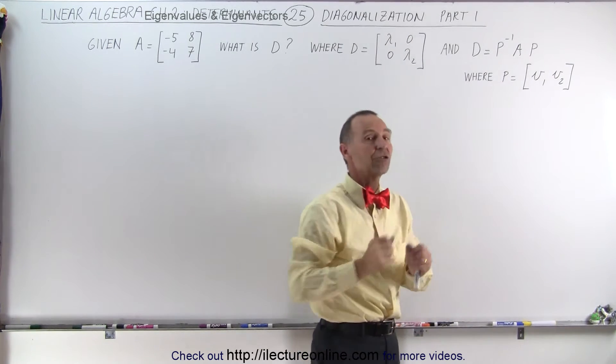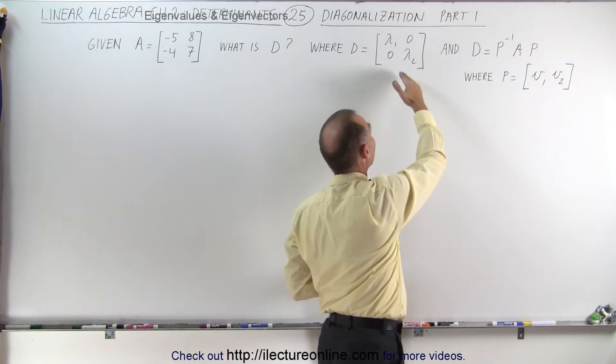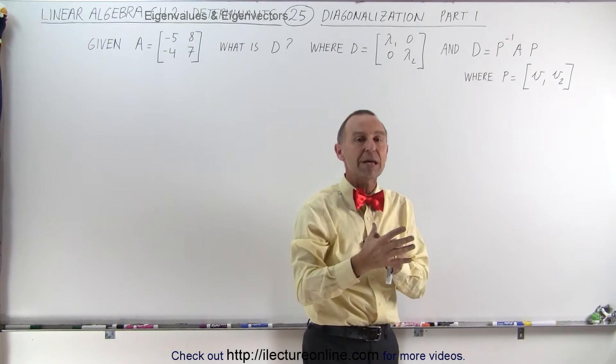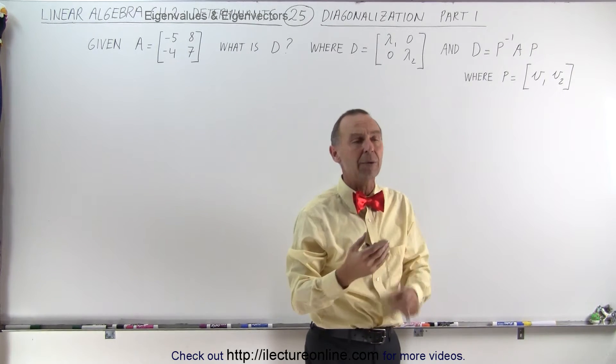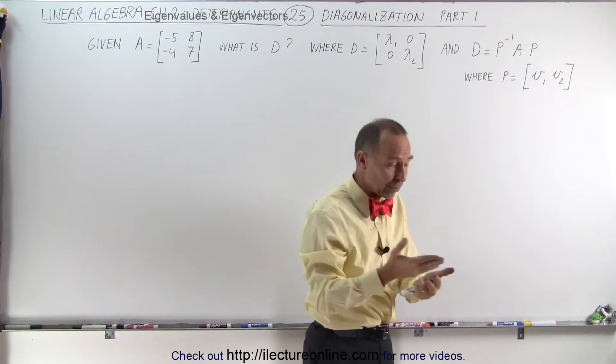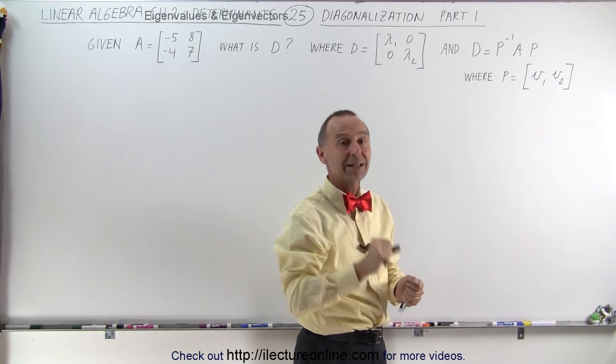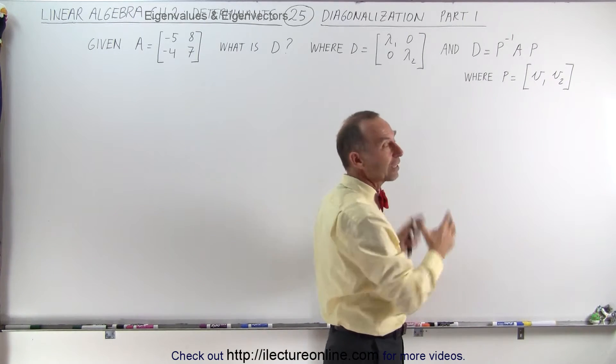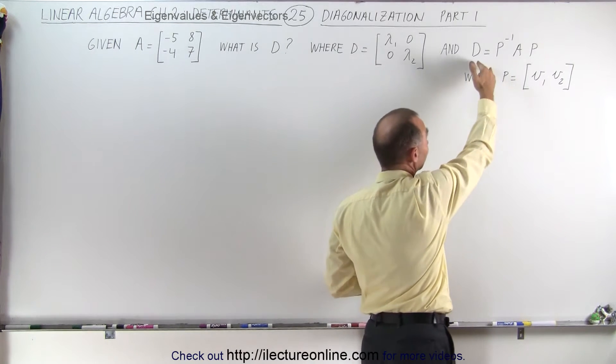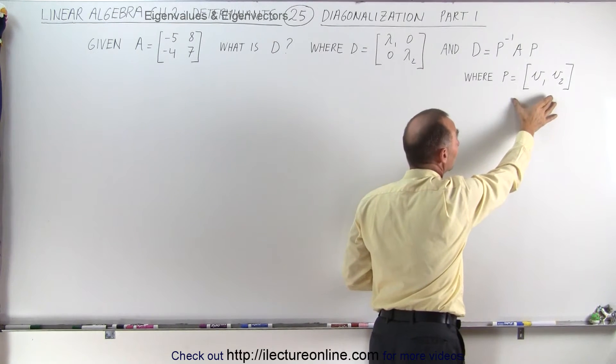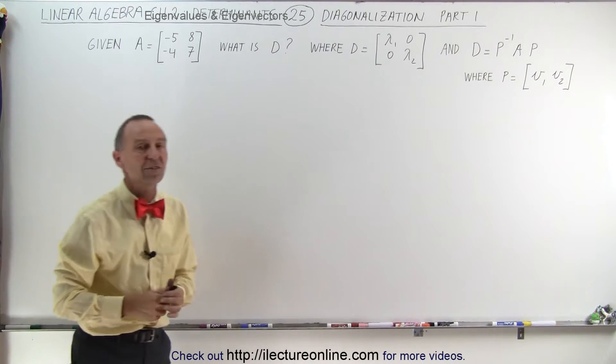So there's a nice relationship there, and then later on we'll find out how we can use the diagonalized matrix to find the power of a matrix like A squared, A cubed, or A to the hundred power. Imagine trying to find A to the hundred power using a calculator when there's an easier method to do that, but we need to know how to diagonalize the matrix first.